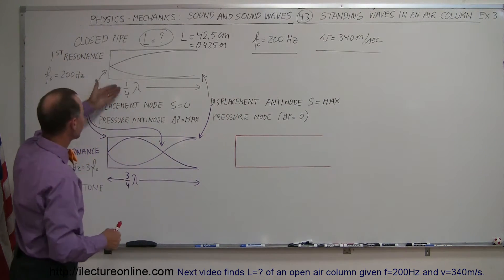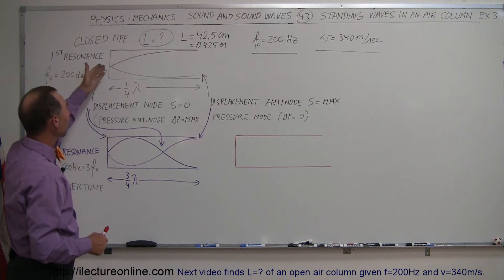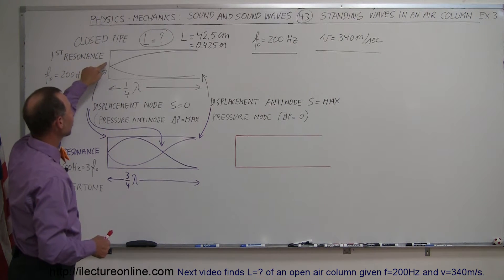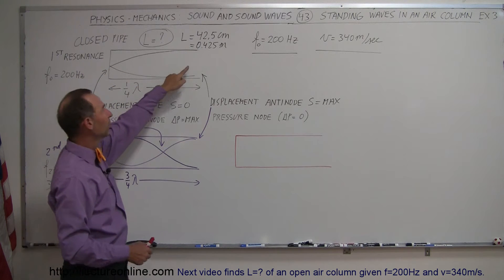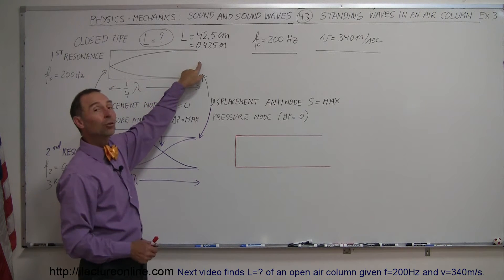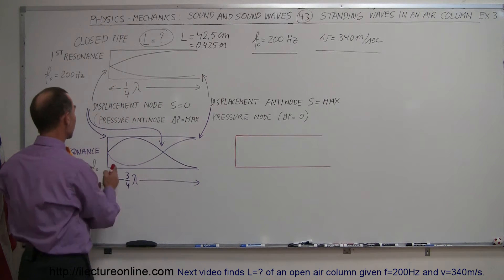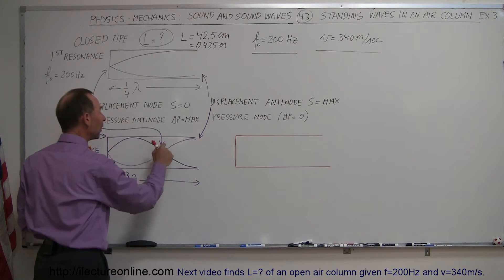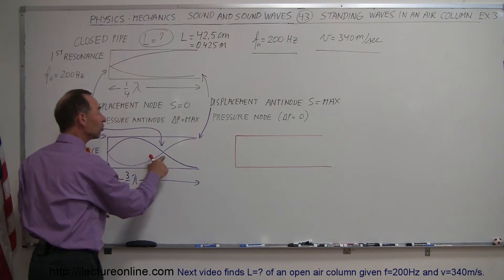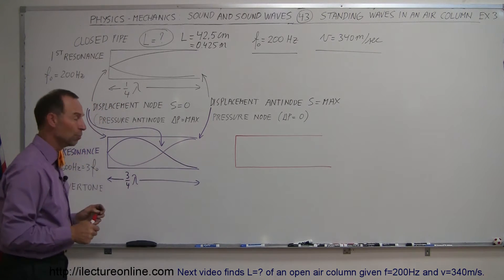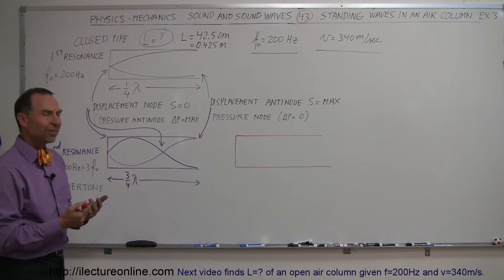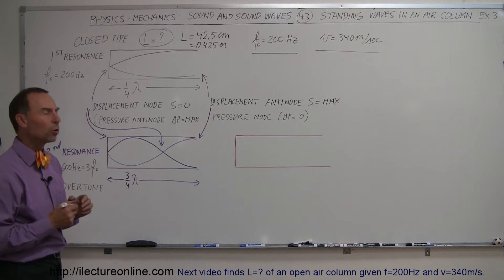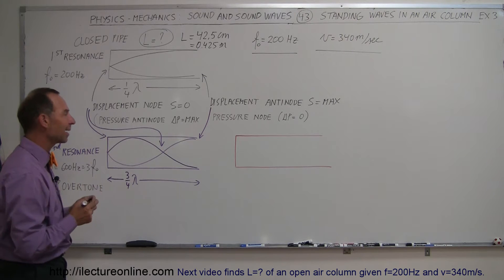Just like in the other two examples: in the first example we had our first resonance frequency with a displacement node on the closed side and a displacement antinode on the open side. In the second example, we have the same displacement node and antinode, but with one additional displacement node somewhere inside the tube. For the third example, we're going to have two additional displacement nodes inside the tube.